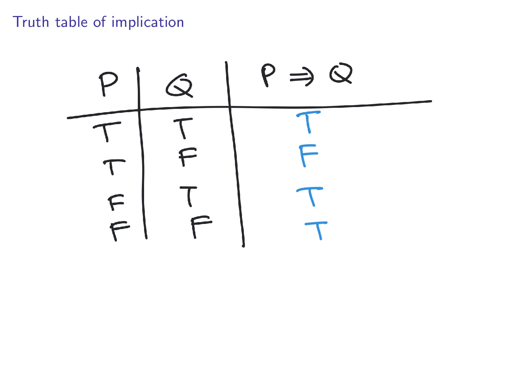P implies Q means: if we assume P is true, then Q is true. So the first line is obvious — if the assumption is true and the conclusion is true, the implication holds. It cannot happen that the assumption is true and the conclusion is false, so that line is false. For the last two lines, if you start with a false assumption, Q can be anything — true or false.